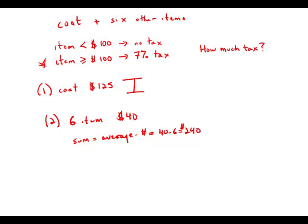So those six items cost $240, and since we spent $365, this tells us that the coat equals $125.